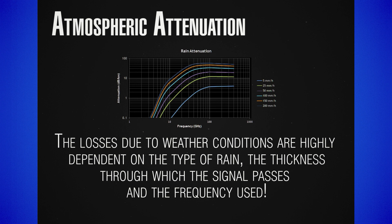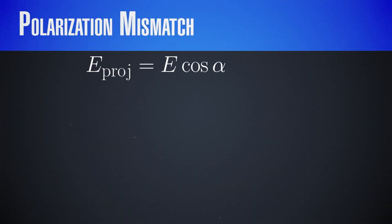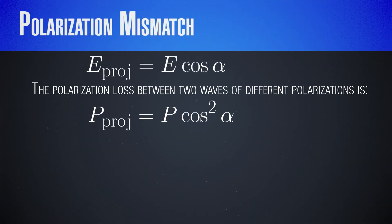As a side effect of interactions with the atmosphere and due to pointing problems, the polarization might also have some mismatch. Since the projection of one field by the direction of another is given by the cosine between the two and the power is proportional to the square of the field, the power reduction due to the field having different direction is proportional to the square of the cosine between them.